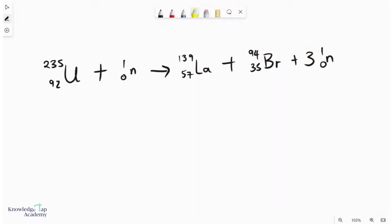And of course, if you look at the proton number, 92 plus 0 is the same as 57 plus 35 plus 0.